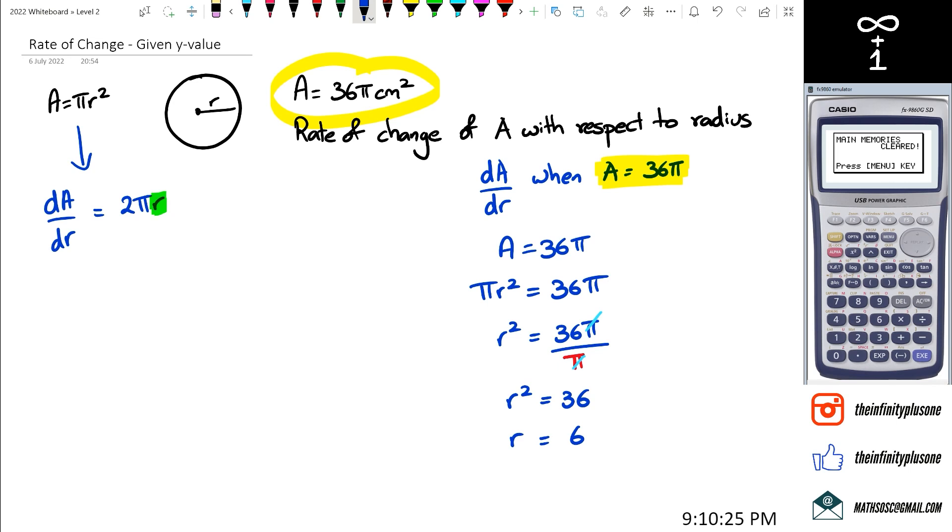Now, we're going to say positive 6. We're not really going to worry about the negative 6 here, because radius has got to be a positive number, right? So that's going to be 6 centimeters.